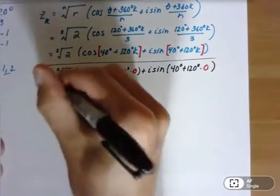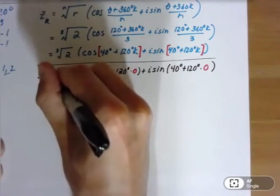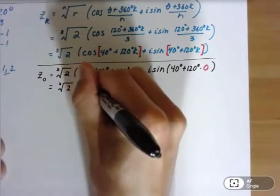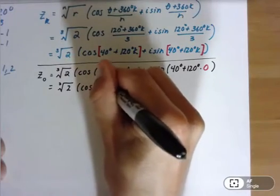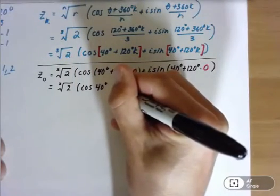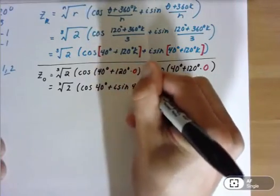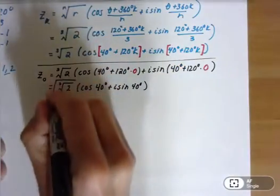So our first root is just simply the cube root of 2 times cosine of 40 degrees plus i sine of 40 degrees. There's our first answer for z sub 0.